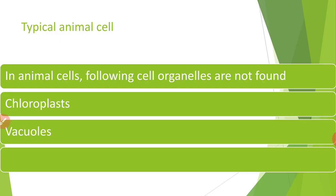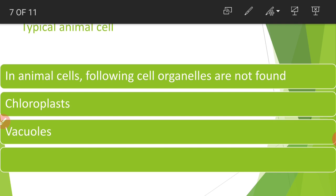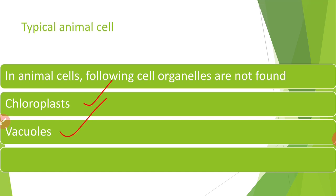In animal cells, chloroplasts are not found because the animal cell is a heterotroph — it is not autotrophic in nature, so there is no need for chloroplasts. Vacuoles are generally absent in animal cells. Plasma membrane is a unit membrane and it exhibits the fluid mosaic model. Plasma membrane separates one cell from another, maintaining the individuality of the cell — cell identity is maintained by the plasma membrane. It is selectively permeable.